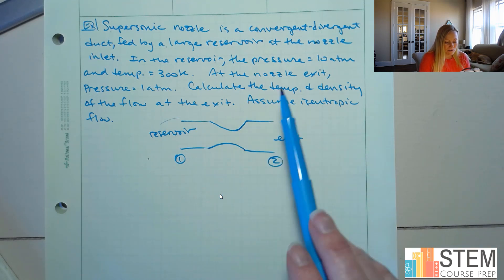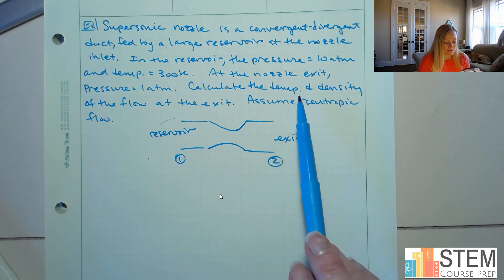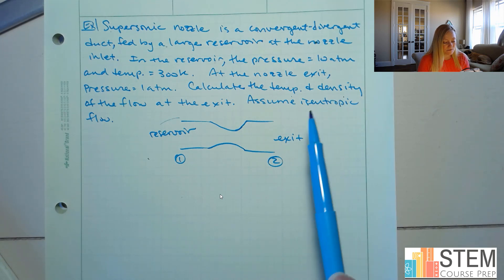Now in the reservoir, our pressure is going to be 10 atmospheres, and the temperature is going to be 300 Kelvin. Now at the nozzle exit, which is over here, our pressure is 1 atm. What we want to do is we want to calculate the temperature and the density of the flow at this exit, so 0.2. And we're going to assume isentropic flow.